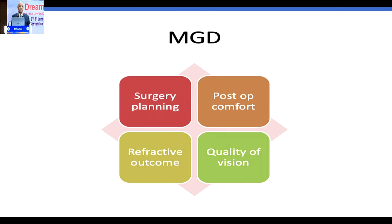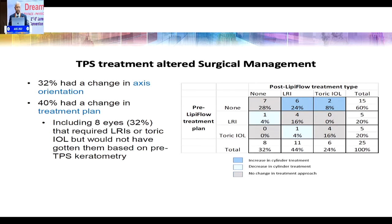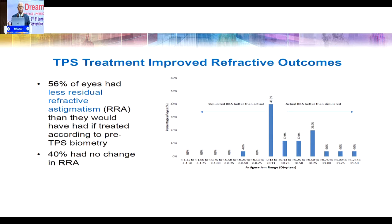Refractive outcome: your surgical planning can go completely haywire, and you can get a very poor refractive outcome — either in the sphere, cylinder, axis, or all three put together. Statistics say that if you treat dry eye and then do a keratometry, 32% of patients have a change in their axis before and after the K-values. In 40% we have to change the treatment plan itself. And residual refractive astigmatism can be as high as 50% if you don't handle this preoperatively.